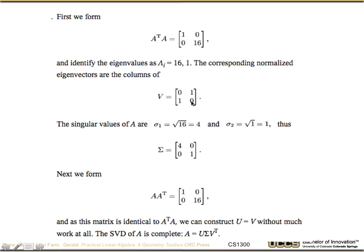So our singular values are the square roots of the eigenvalues, so that gives us 4 and 1. And our sigma matrix then is [4, 0; 0, 1].